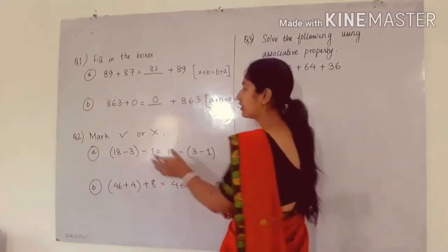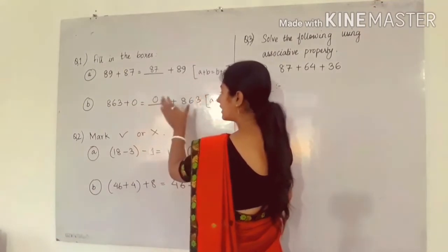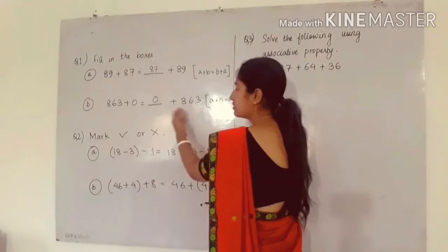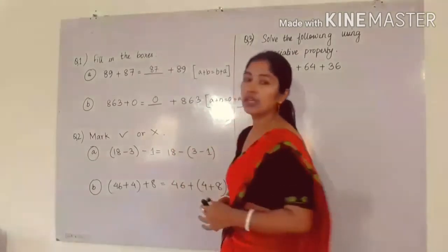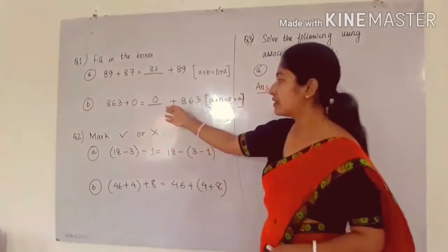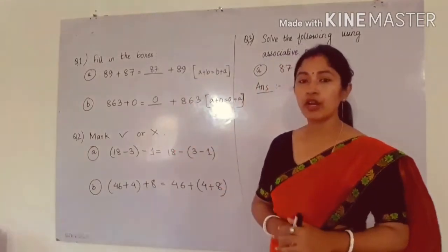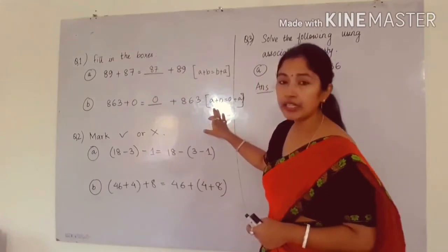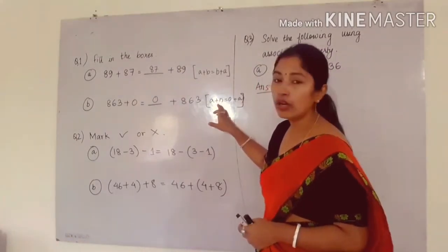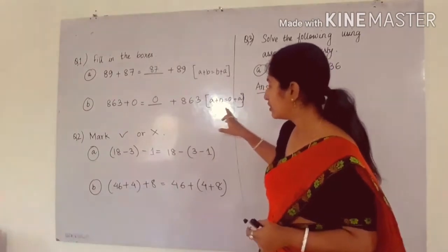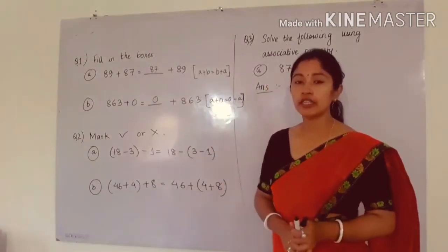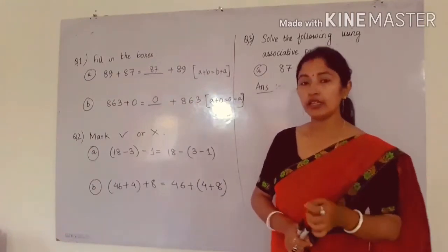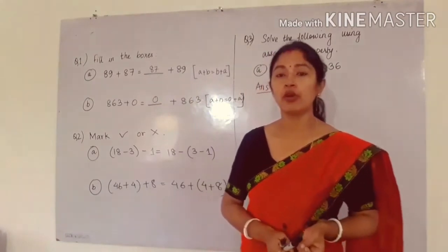In the left hand side part we have 863 plus 0. Therefore in the right hand side part also, 863 is already present. That means in the blank space there should be 0. Here we can say we are using commutative property for addition in whole numbers, or we can say the additive identity in whole numbers. 0 is the additive identity in whole numbers, because whenever we add 0 to any whole number, we will get the same whole number again.